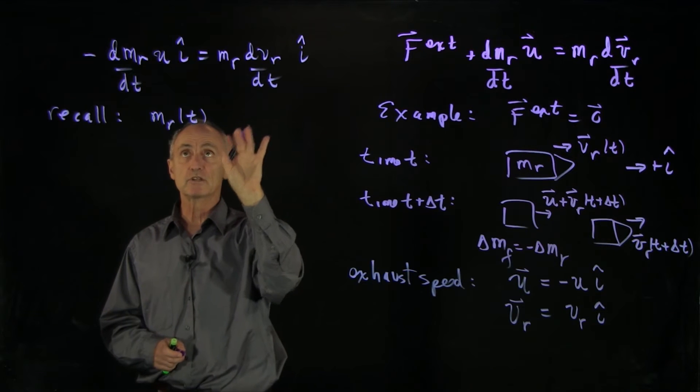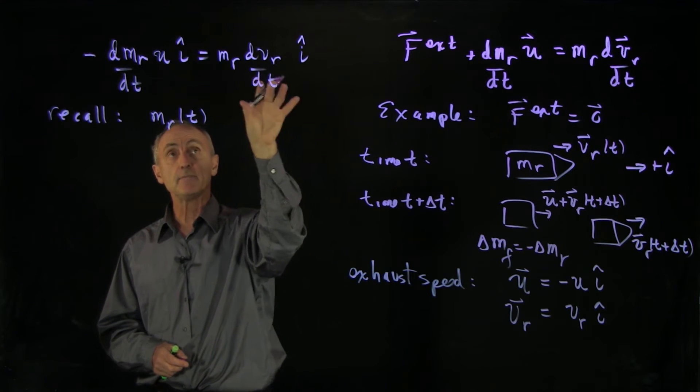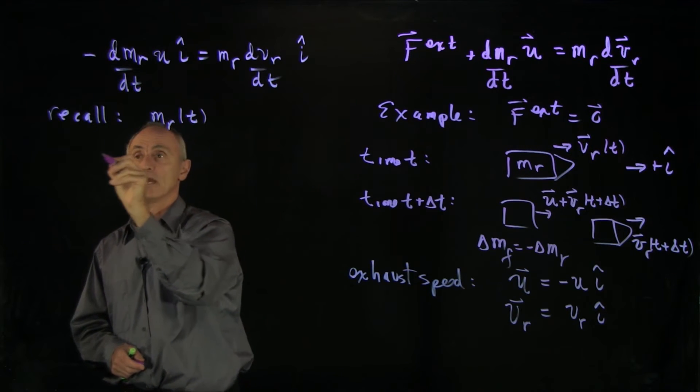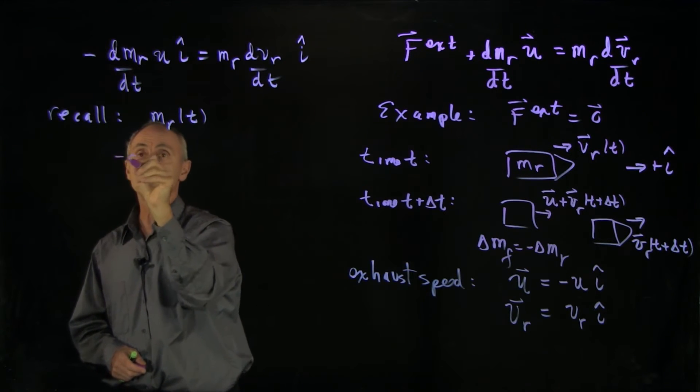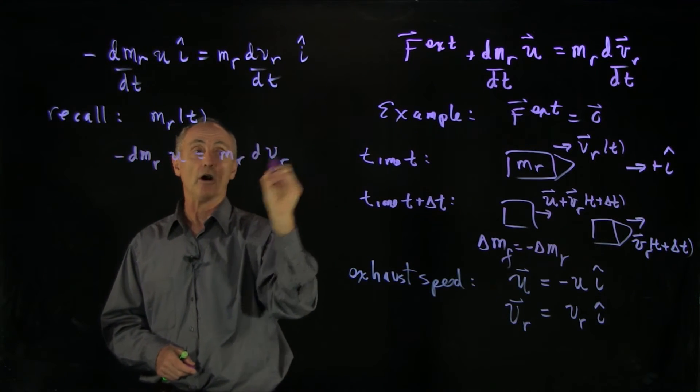But we can look at this differential equation just by eliminating the time completely by multiplying through by dt, in which case, we have minus dm_r times u equals m_r dv_r.